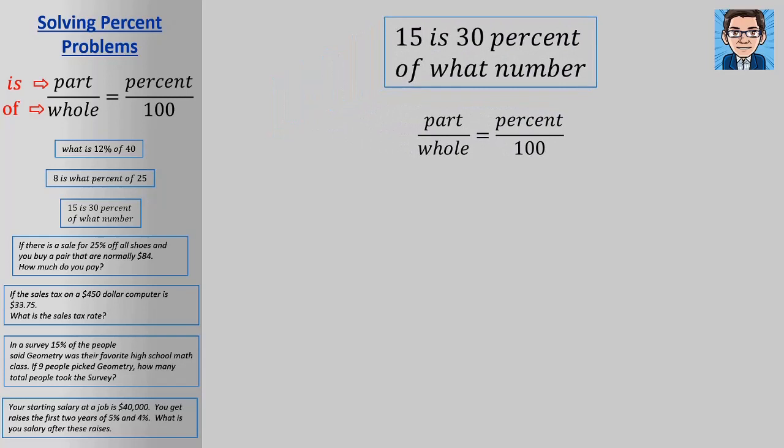Okay. Here 15 is 30% of what number. So we know the part, which is 15. We don't know the whole. Of what number? We don't know the of. So that's where our variable goes in this one. And we do know the percent, 30. Now we're going to cross multiply and get 30x equals 1500. Divide both sides by 30 and get x equals 50.